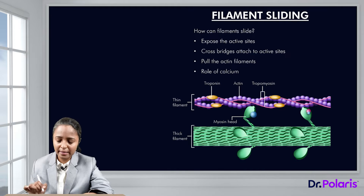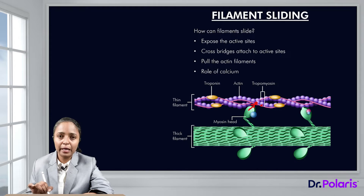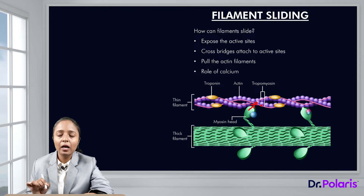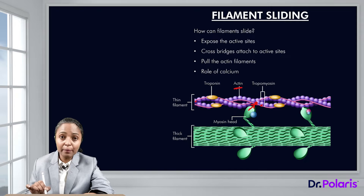How do filaments slide? The actin filament consists of active sites which can bind the myosin head. This myosin head has an intrinsic, inbuilt ability to bind to these active sites on actin. However, when the muscle is not contracting, these active sites of actin are kept covered by tropomyosin.